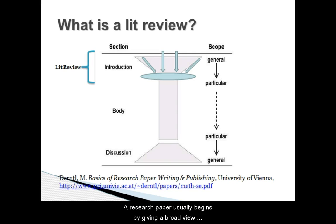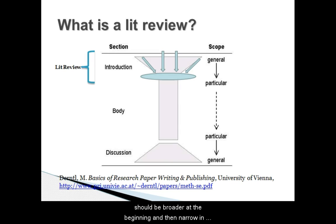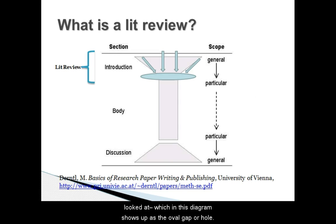A research paper usually begins by giving a broad view of the topic, narrows to the paper's specific area, then broadens to conclude with more universal implications or applications. You can see how the lit review is only one part of the larger research paper — it should be broader at the beginning and then narrow in to talk about the specific research question, which in this diagram shows up as the oval gap or hole.